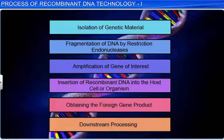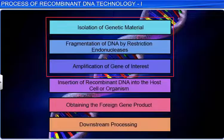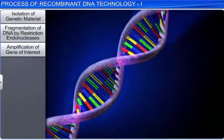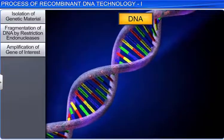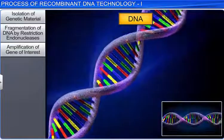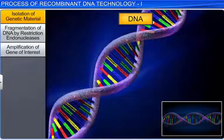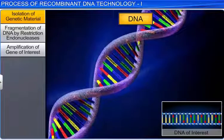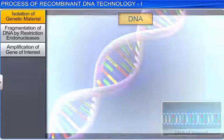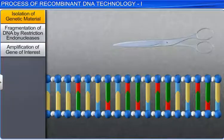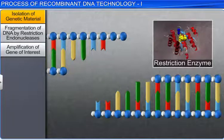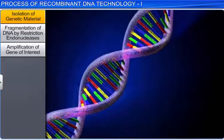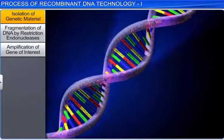Let us understand the processes that help carry out the first three steps successfully. The genetic material in most organisms comprises DNA. In recombinant DNA technology, the first step is to select and isolate the piece of DNA of interest to be inserted into a cloning vector. Then, this piece of DNA is cut using restriction enzymes. To cut with restriction enzymes, the DNA should be in a pure form.